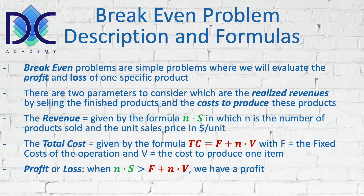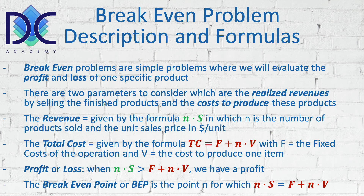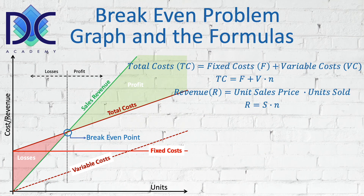When the revenue is larger than the total cost, we have a profit; when it is smaller, we have a loss. There is also what we call the break-even point, or BEP — the number of products sold or produced for which the revenue equals the cost, meaning n times s equals F plus nV. On the graph, we see the variable cost line starting from zero, the horizontal fixed cost line, and the red total cost line going up.